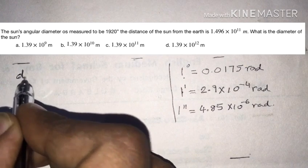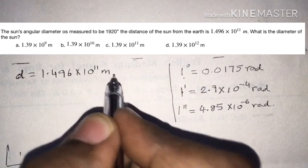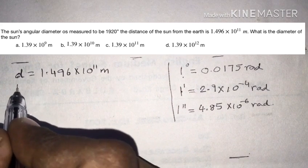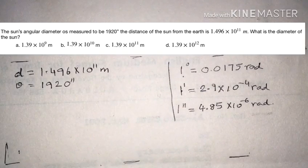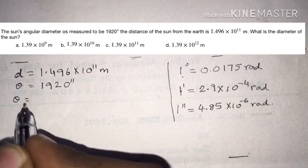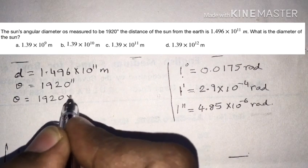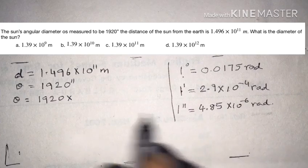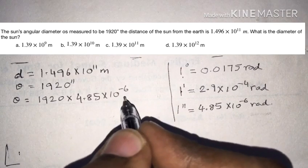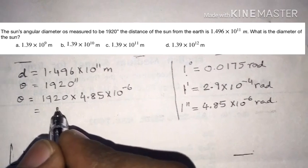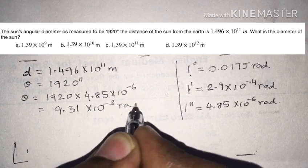The given data: distance d equals 1.496 into 10 power 11 meters, and the angle theta equals 19 minutes 20 seconds, which is 1160 seconds. Converting to radians: 1160 multiplied by 4.85 into 10 power minus 6, giving 9.31 into 10 power minus 3 radians.